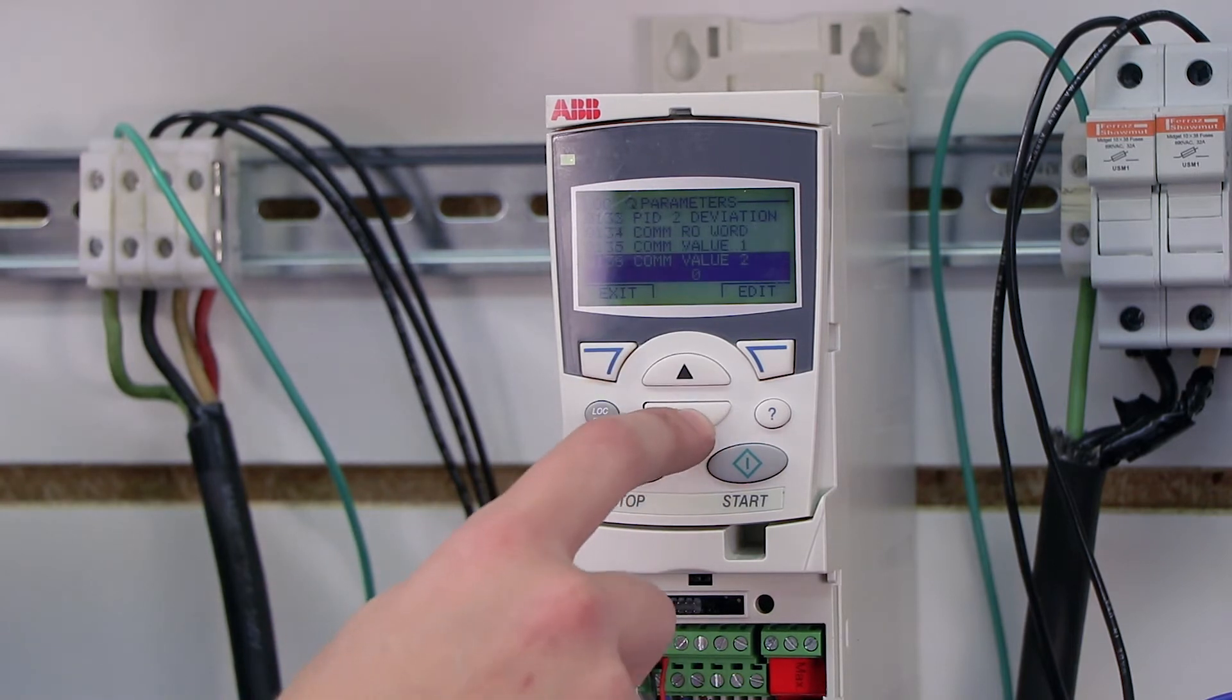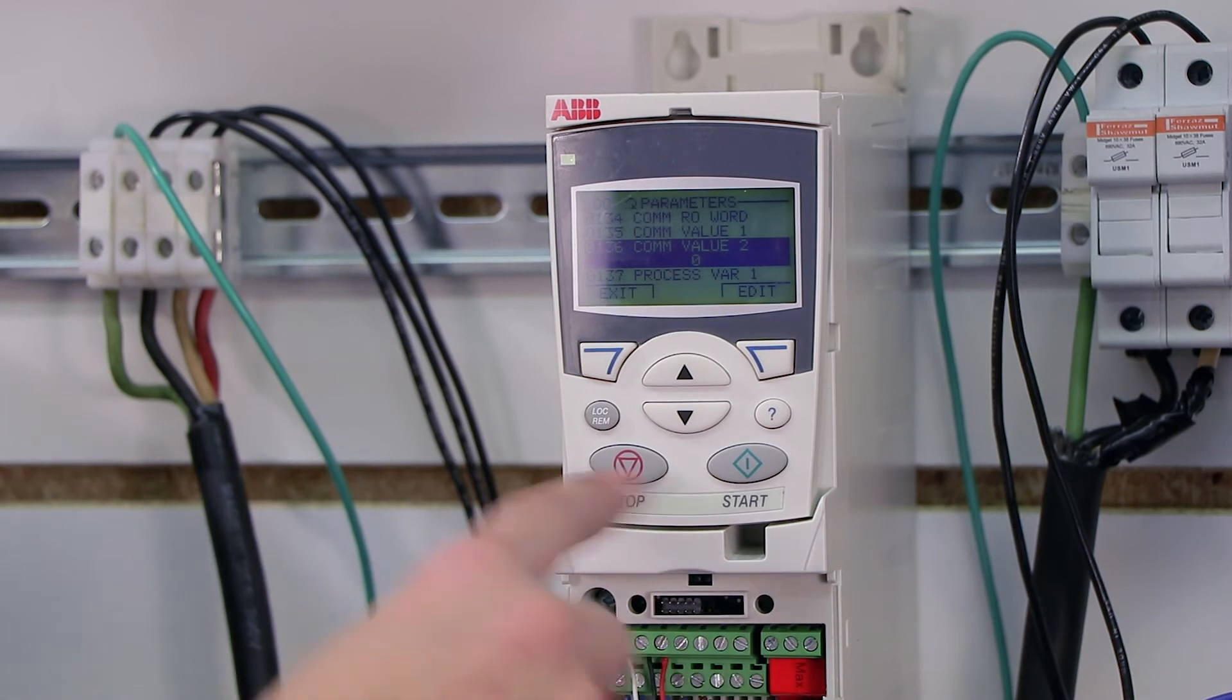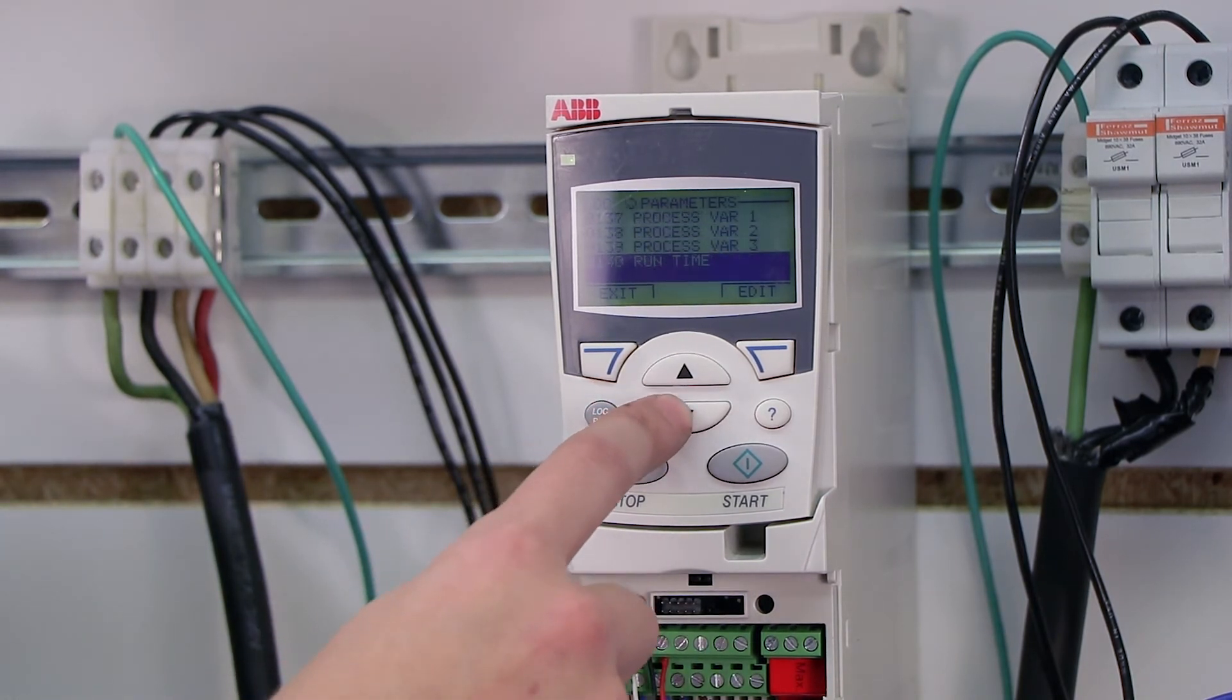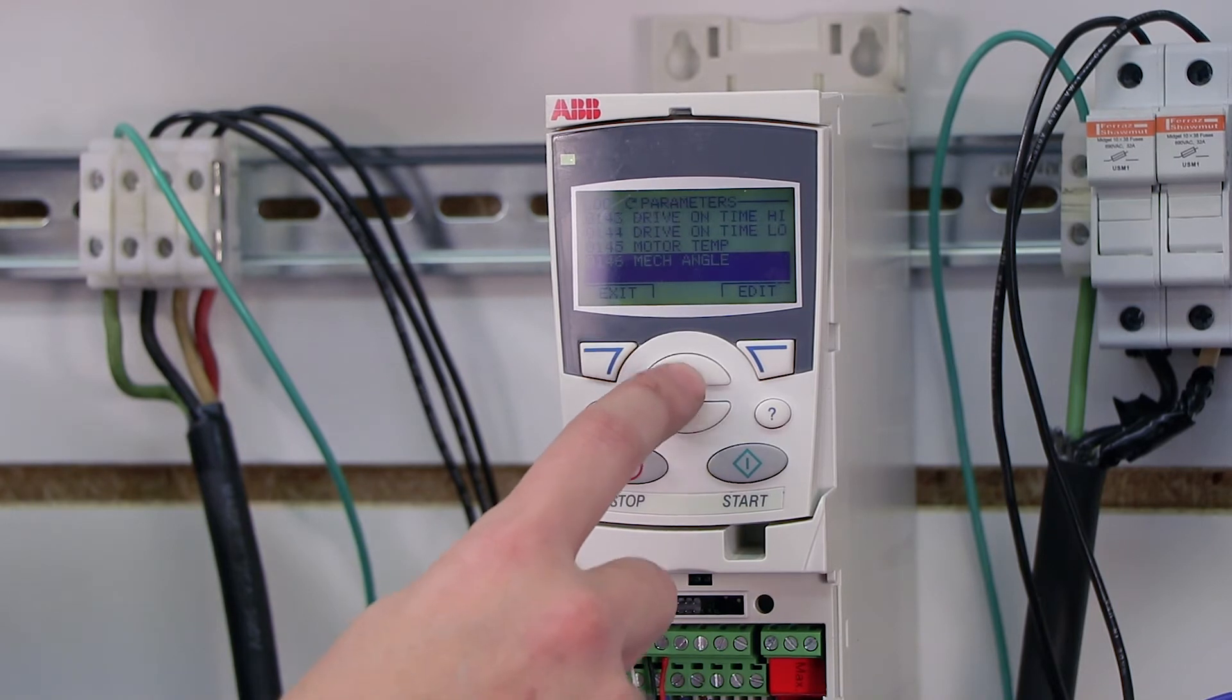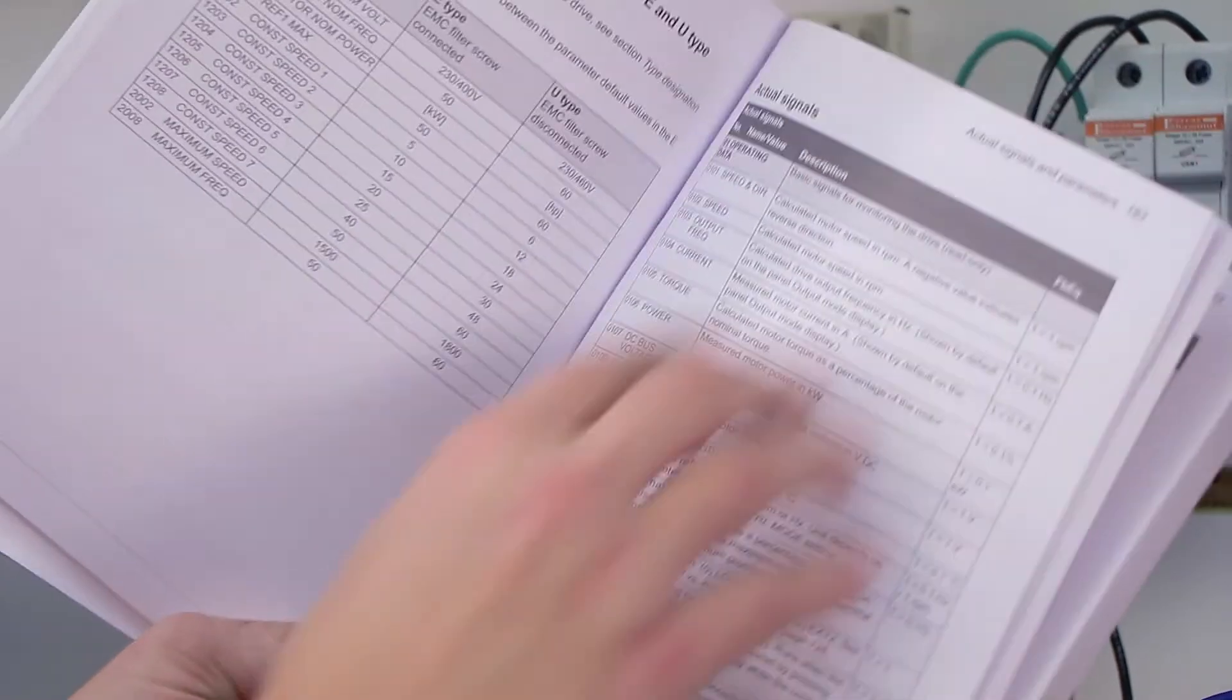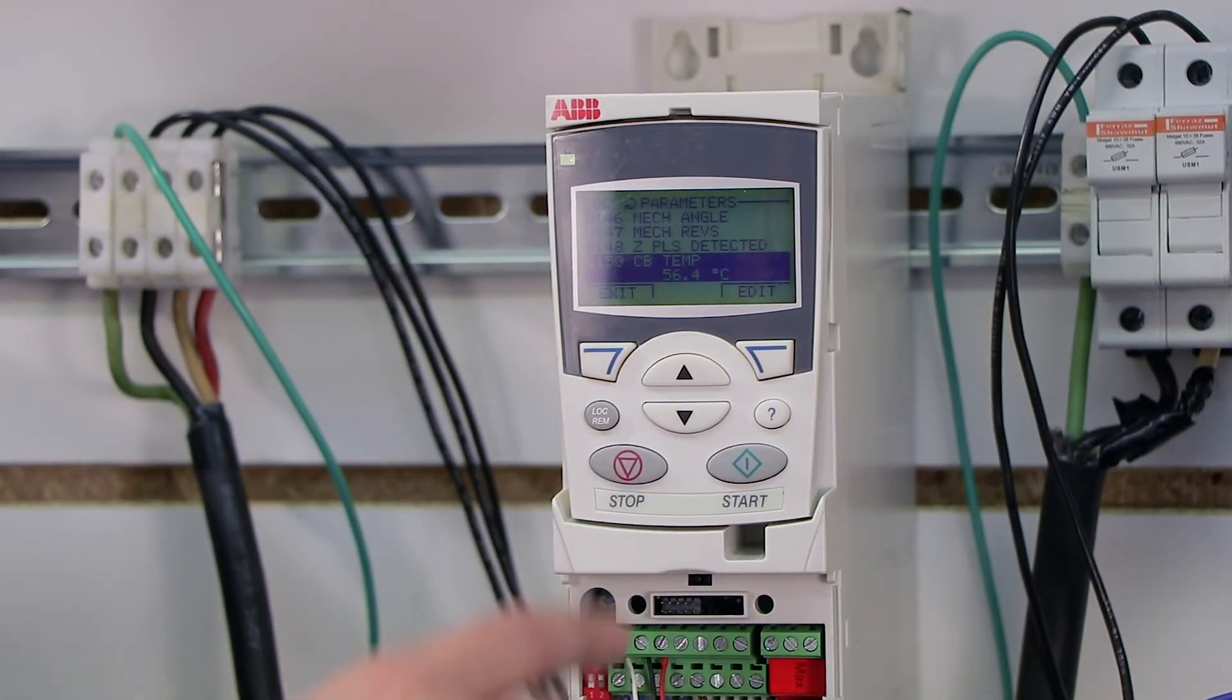These are communications words. These communications words are part of setting up any kind of communications module for sending commands. And we can basically spend all day going through these because there's a lot of them. At this point, I've covered the most important ones, which are on the first couple pages of the manual. What I would encourage you to do is actually pull out your manual and go through them yourself and see what the current state of your drive is at.